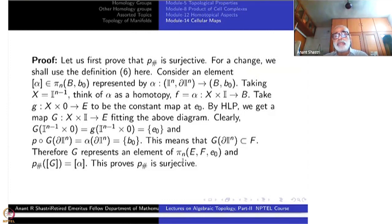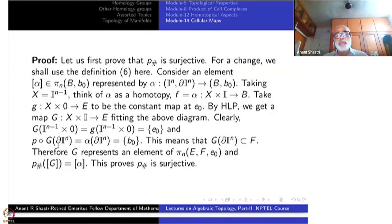Therefore G represents an element of pi_n(E, F, E_0). By definition 6, pi_n(E, F, E_0) is represented by a map from I^n to E such that boundary of I^n goes into F and the base point goes to E_0. And p-check of G is alpha — that is, p composite G equals alpha. This proves that p-check is surjective.